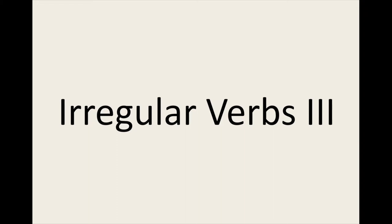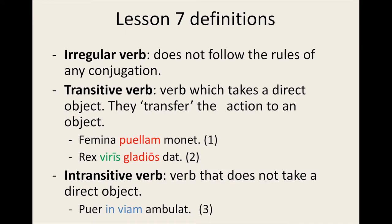In the first part of this lesson, I will discuss a property of verbs we haven't previously covered. In the second half of the lesson, I will introduce two more irregular verbs, and we will round off the lesson with some practice examples. Here are the three definitions we'll be focusing on in this lesson. You will already be familiar with the first one, 'irregular verb', but there are two new ones. First, the word 'transitive.'